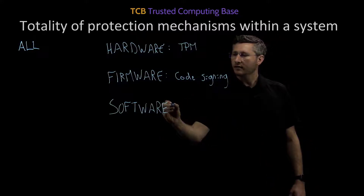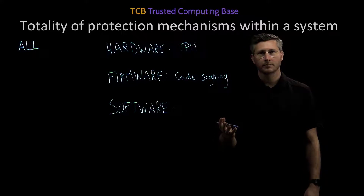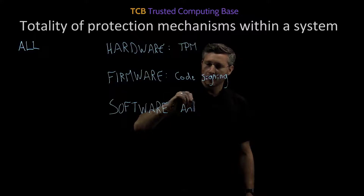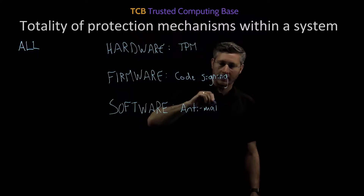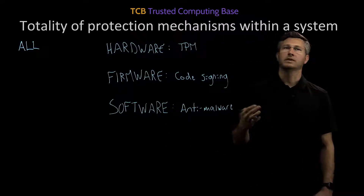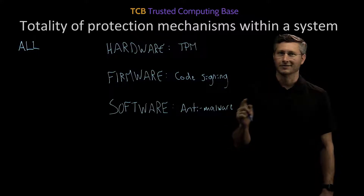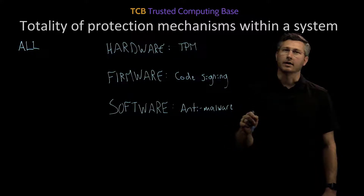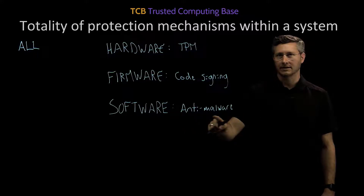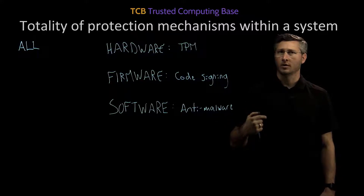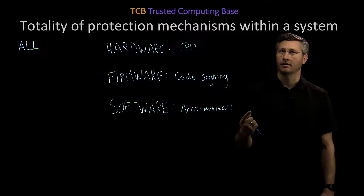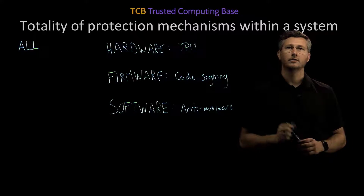What about software? Examples of software protection mechanisms include the anti-malware system that looks for things like viruses, worms, trojans, and all those sorts of things. It could also be things like a host-based firewall, or security kernels — any of the software mechanisms that control a subject's access to an object. That's known as a security kernel; it's the implementation of the RMC, the Reference Monitor Concept.